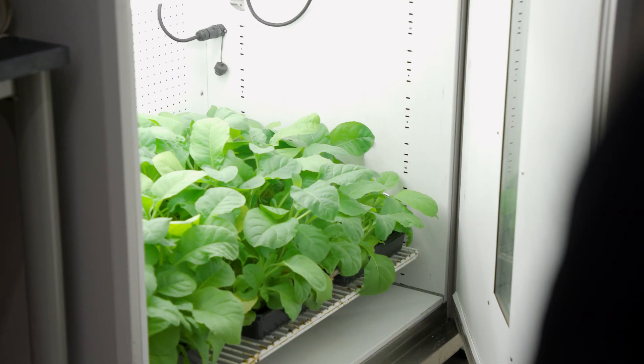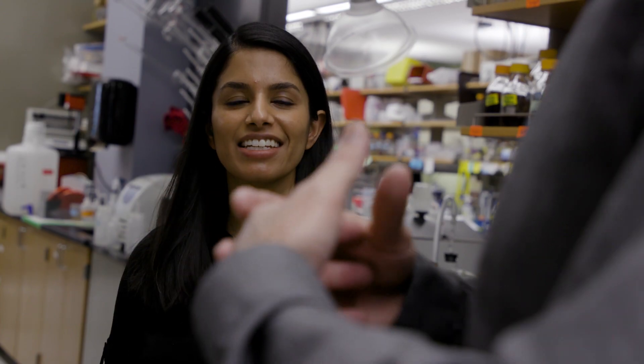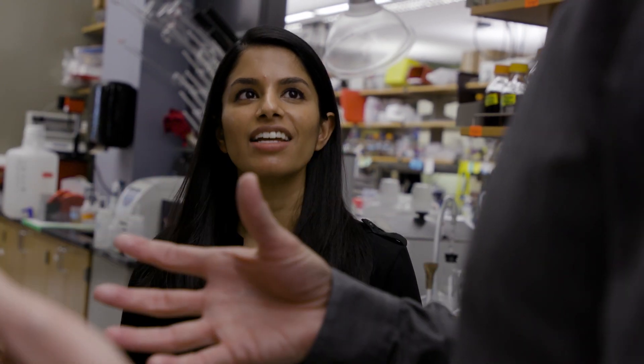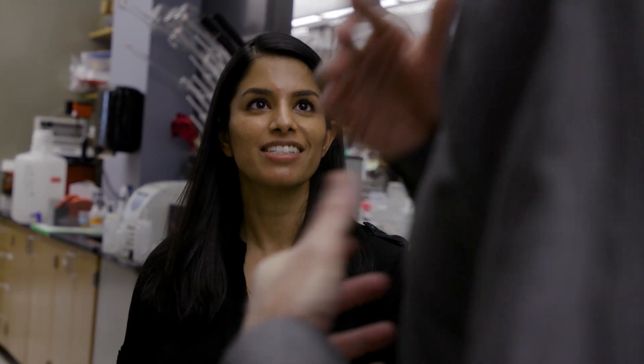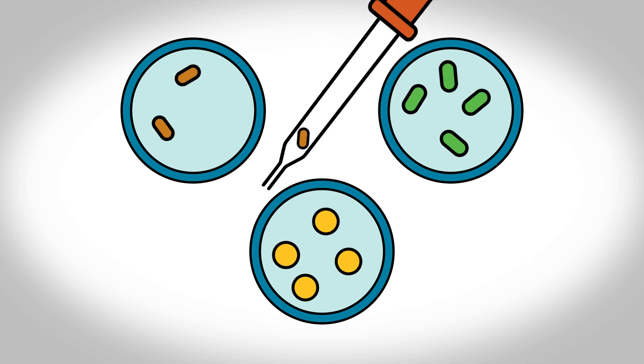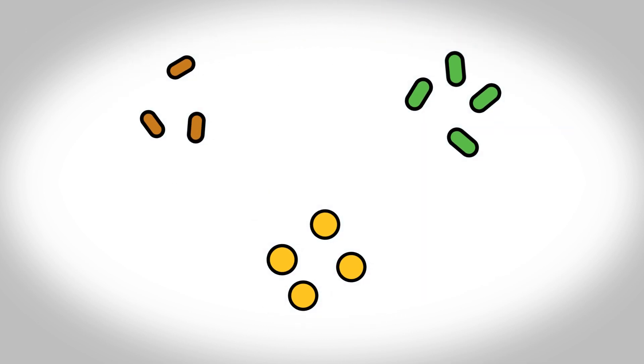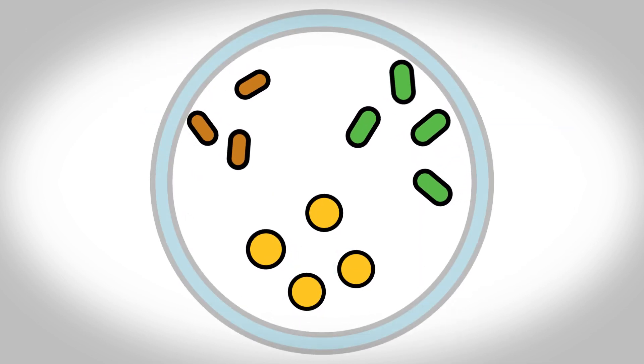That can be really useful if you want to make, for example, a toxic compound that would normally kill a cell. Now you can take all the components of a cell that would make that compound, deconstruct it, and then put it back together.